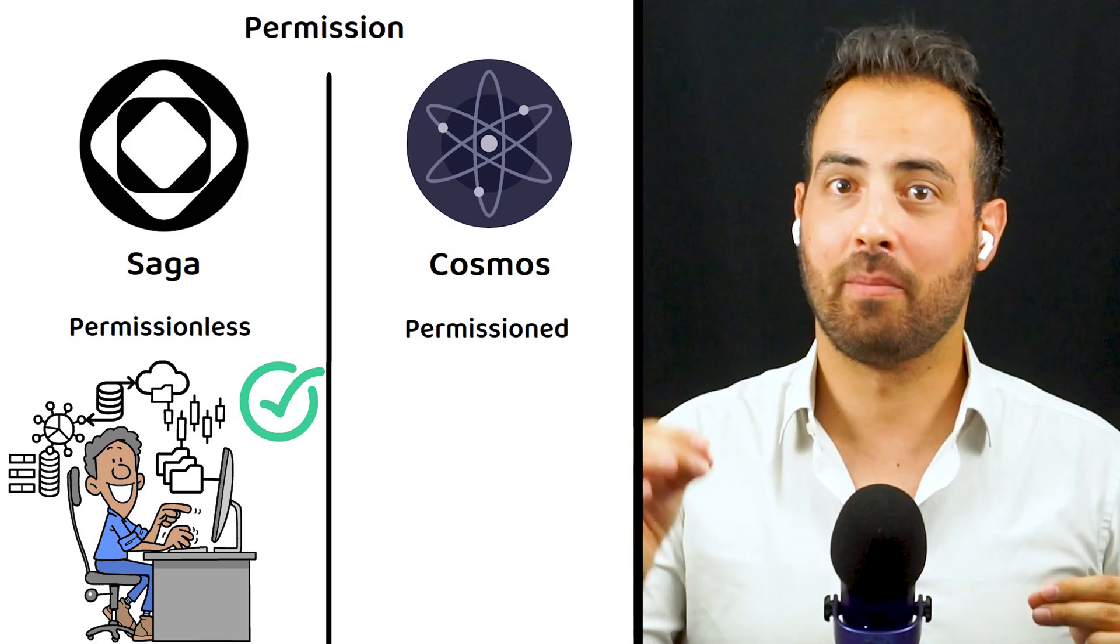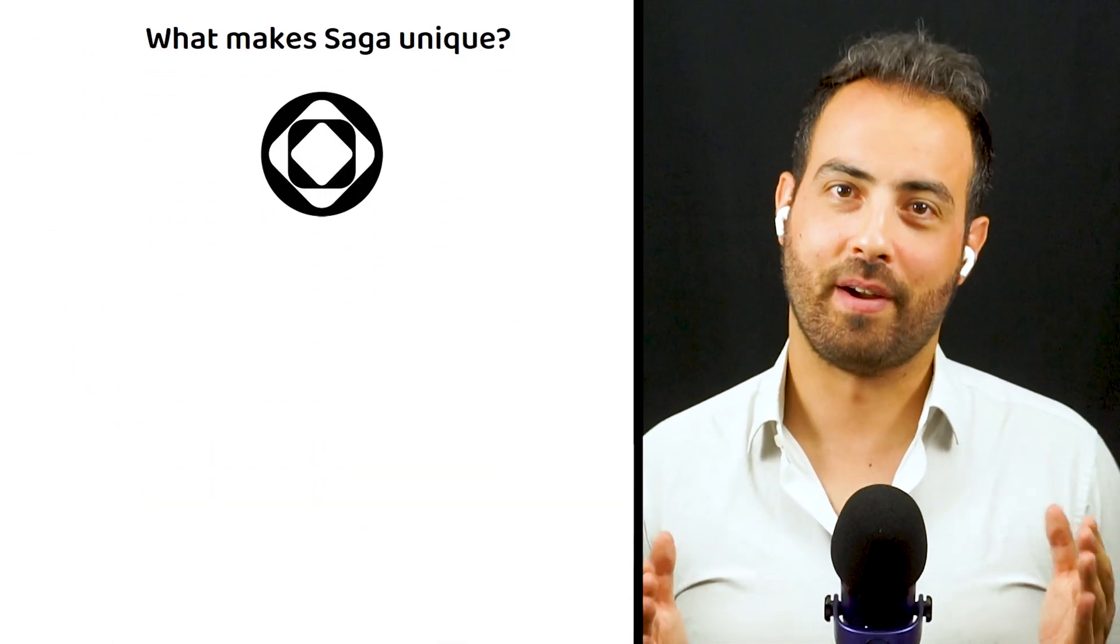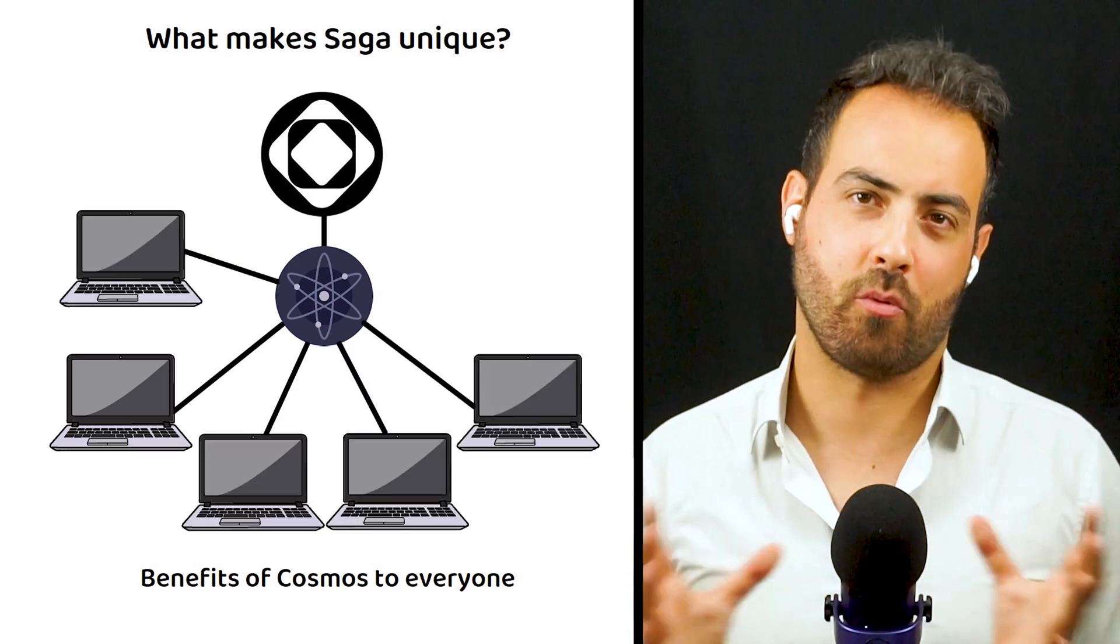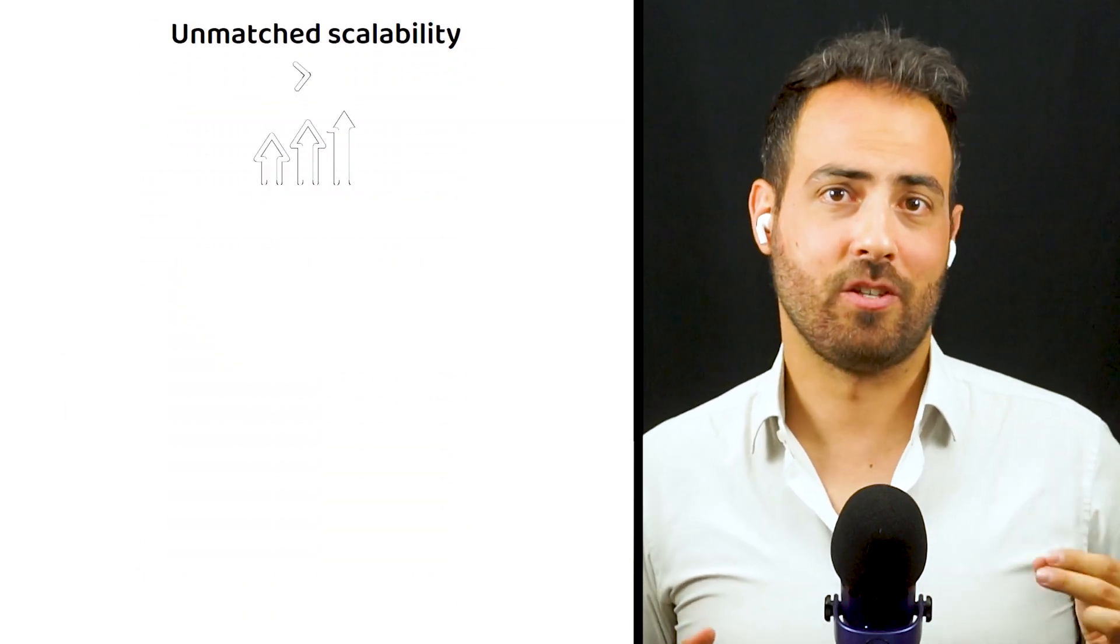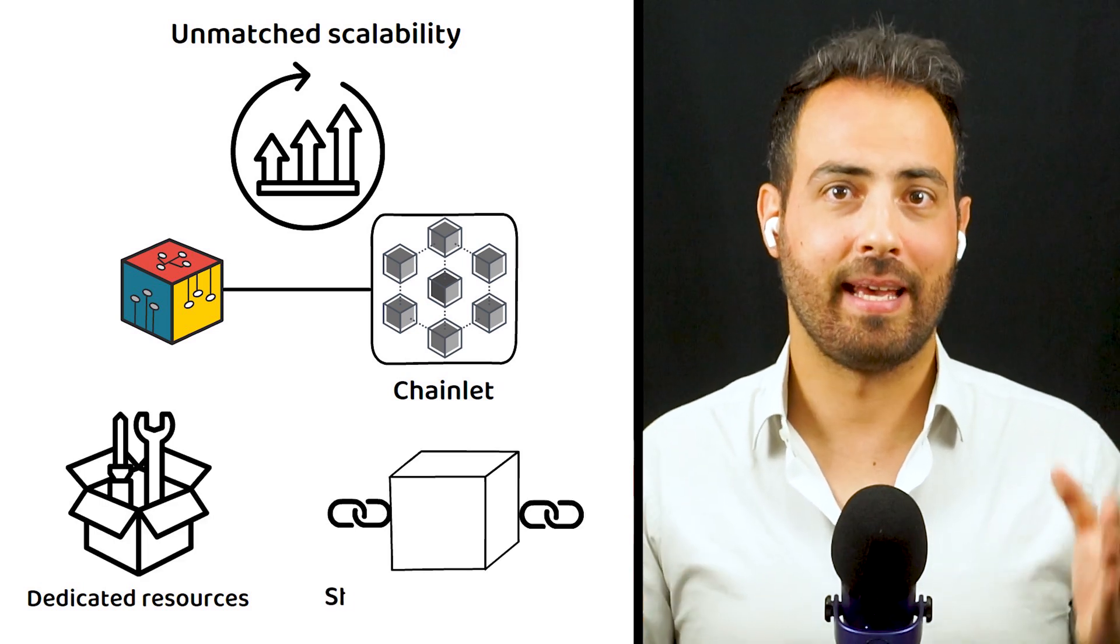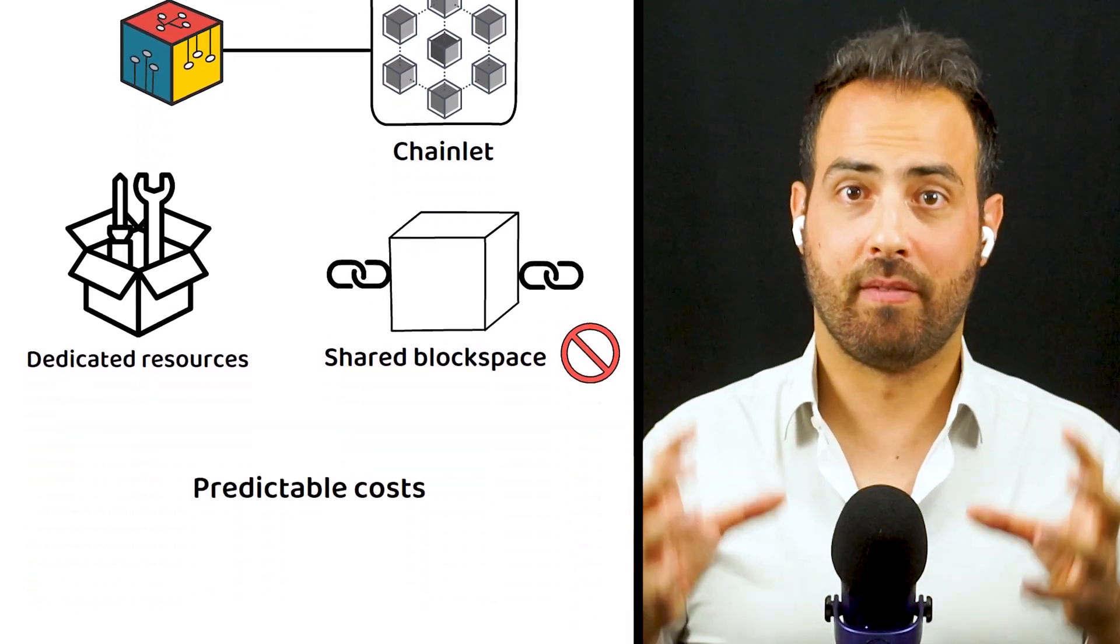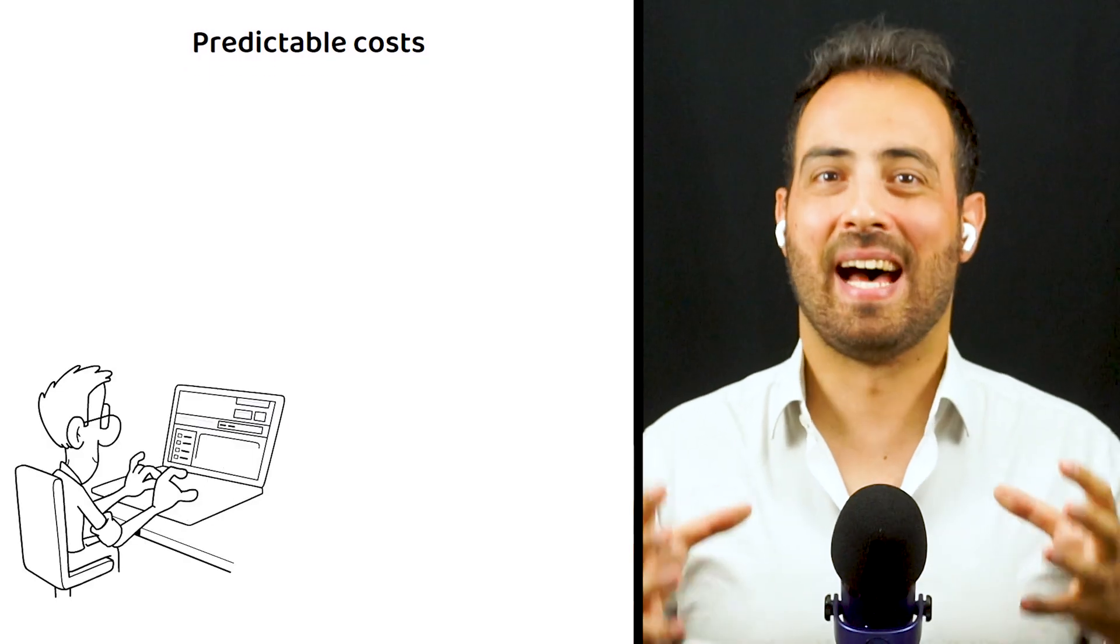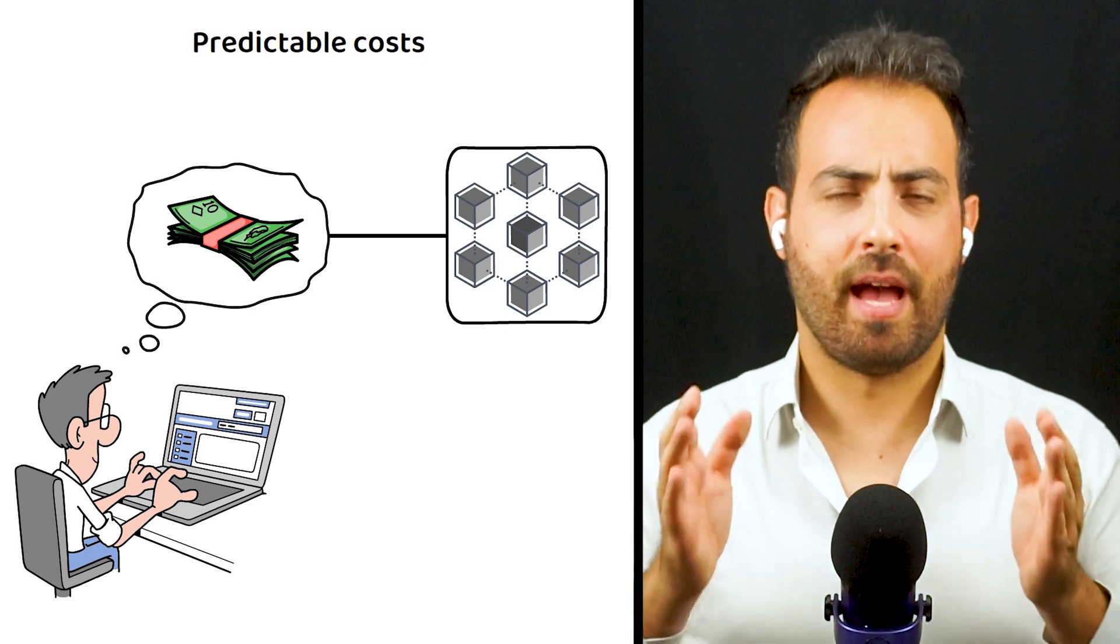But what really makes Saga a game changer? It could be said that Saga's most unique offering is bringing the benefits of Cosmos to everyone. This includes unmatched scalability, as each application has its own chainlet ensuring dedicated resources and eliminating the limitations of a shared block space; predictable costs, where developers have a clear picture of their expenses as they pay for chainlet provisioning based on their specific needs; and finally upgradability...